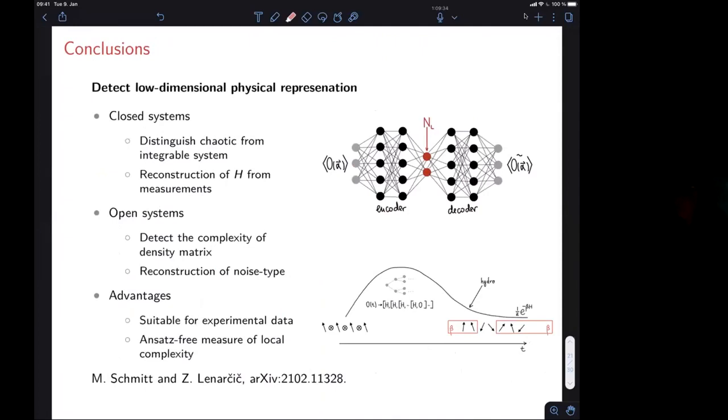So this brings me to the conclusion. I tried to argue that we proposed a machine learning agnostic approach to detect and characterize complexity of quantum states and search for effective simple physical descriptions that apply locally. And this was applied to closed and open systems with several nice side effects of, for example, reconstructing the Hamiltonian from measurements and also reconstructing the type of noise that might be present in the system but unknown to us as an observer. And as I said, since we only need local measurements, we thought that this should be an interesting tool to apply to experimental data. So thank you for your attention.